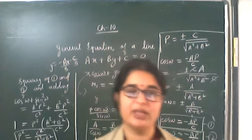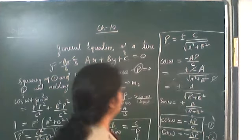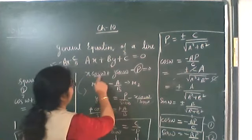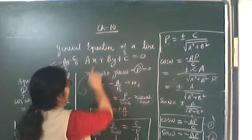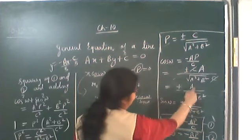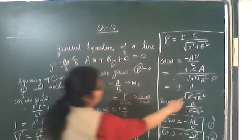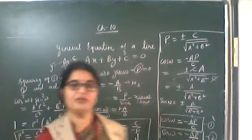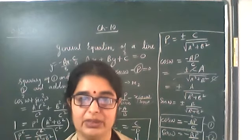From here you can get the values of sin ω and cos ω, and thus write the normal form of the equation. The sign of positive or negative will be determined when we do numerical questions.